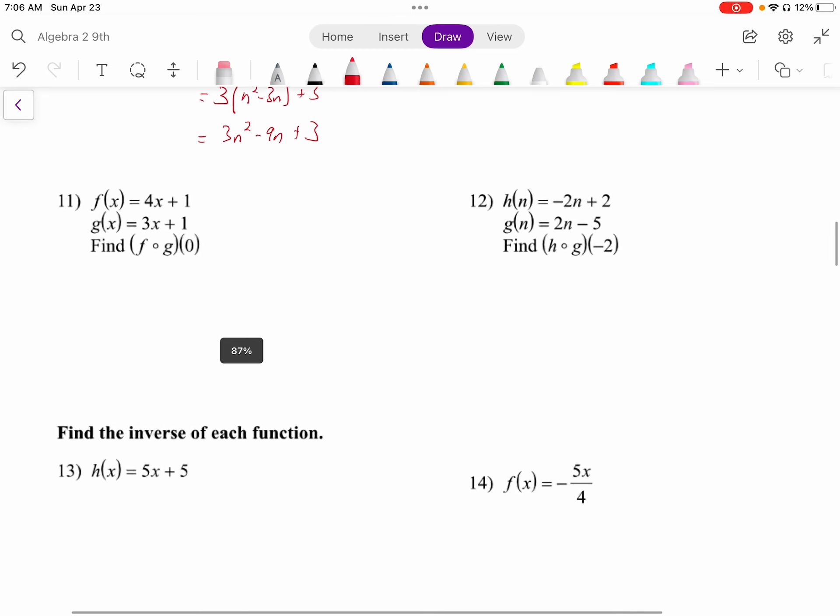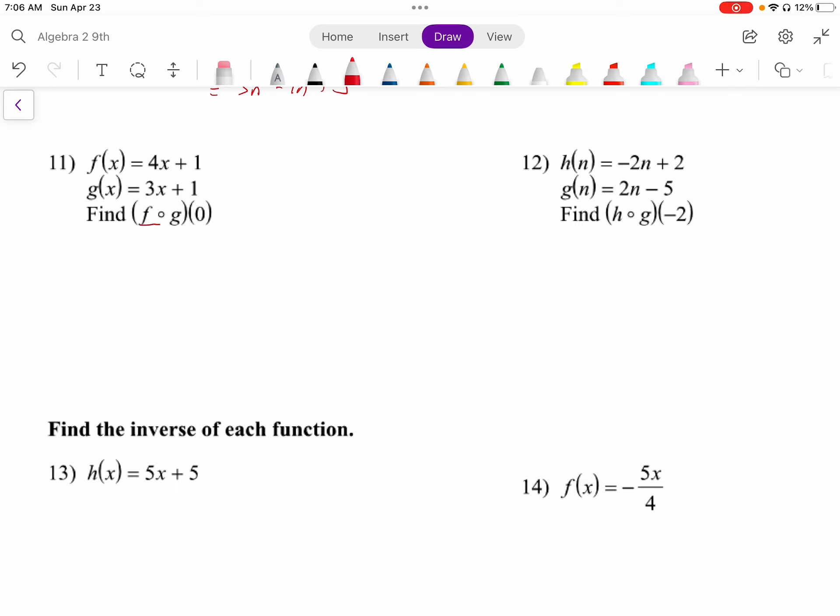And number 11, this is a little bit different because it's asking f composed with g of 0. So there's actually two ways to do this, but since there's a number here instead of just of x, we can start the same way. f composed with g of 0. But we know what to do with g of 0. g of 0 means you put 0 into the g function. So let's do that. What is it if we put 0 in for x? Well that's 3 times 0, which is 0, plus 1. So g of 0 is just 1. And now we do f of 1, which means we put 1 into the f function. So this is 4 times 1 plus 1, which equals 5.